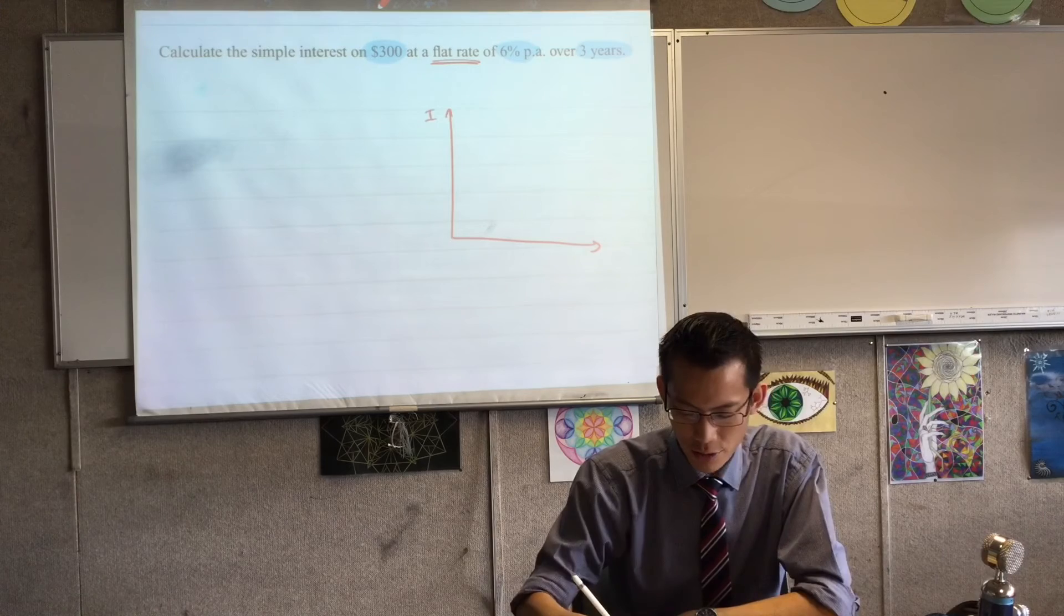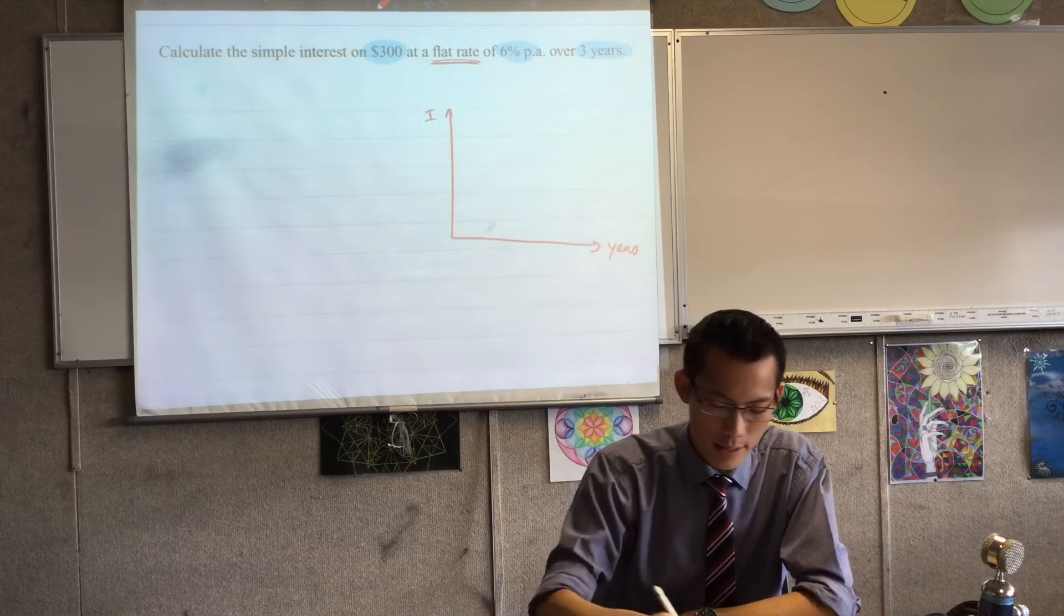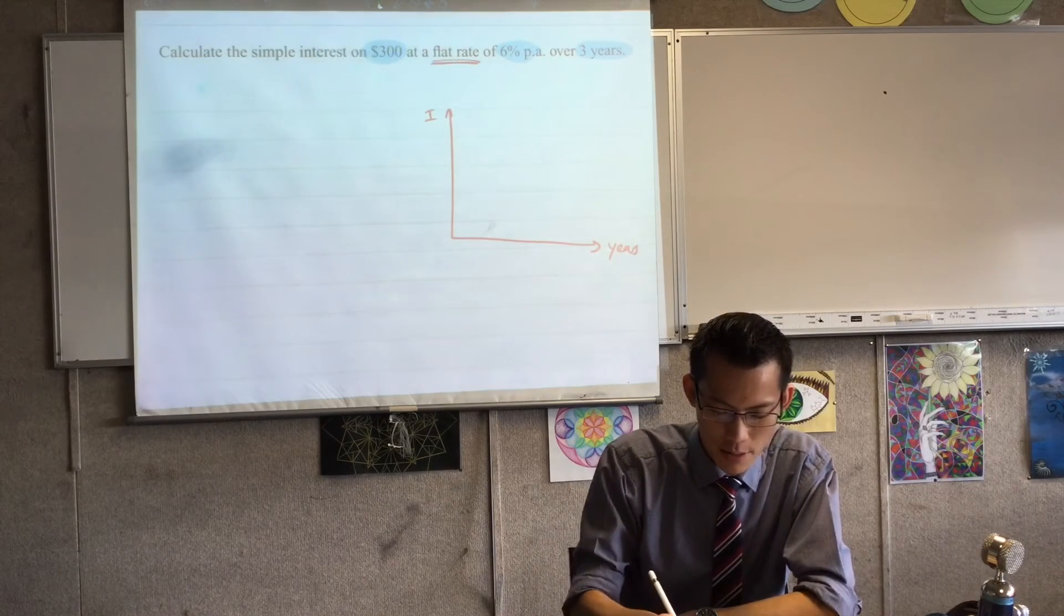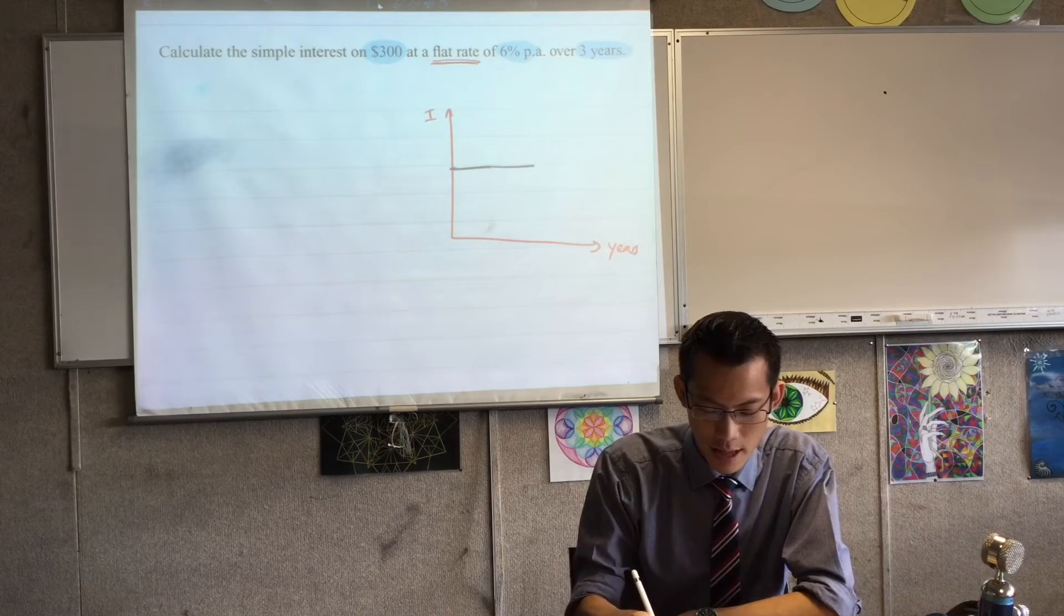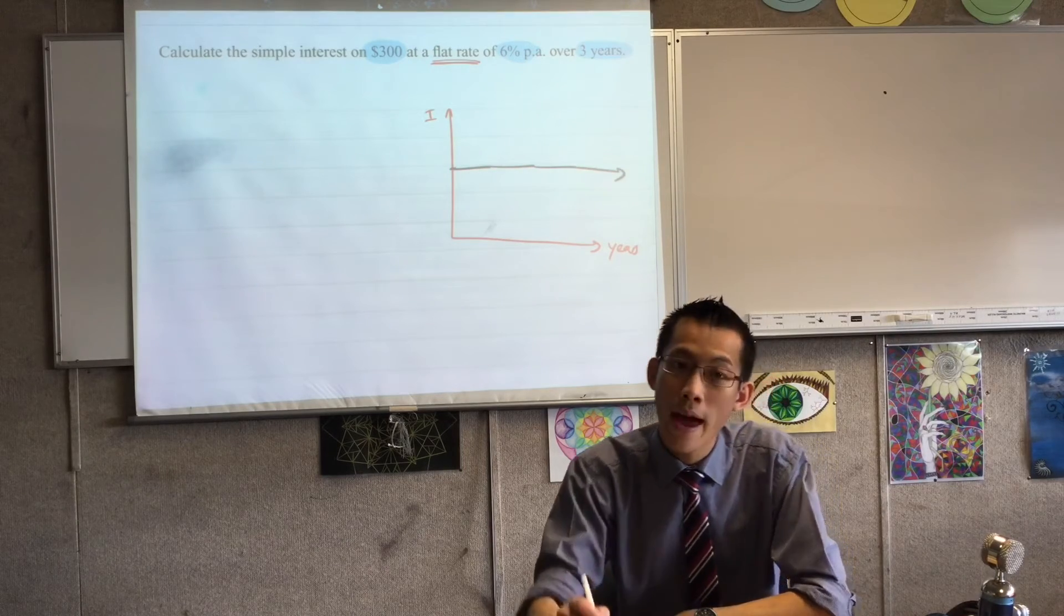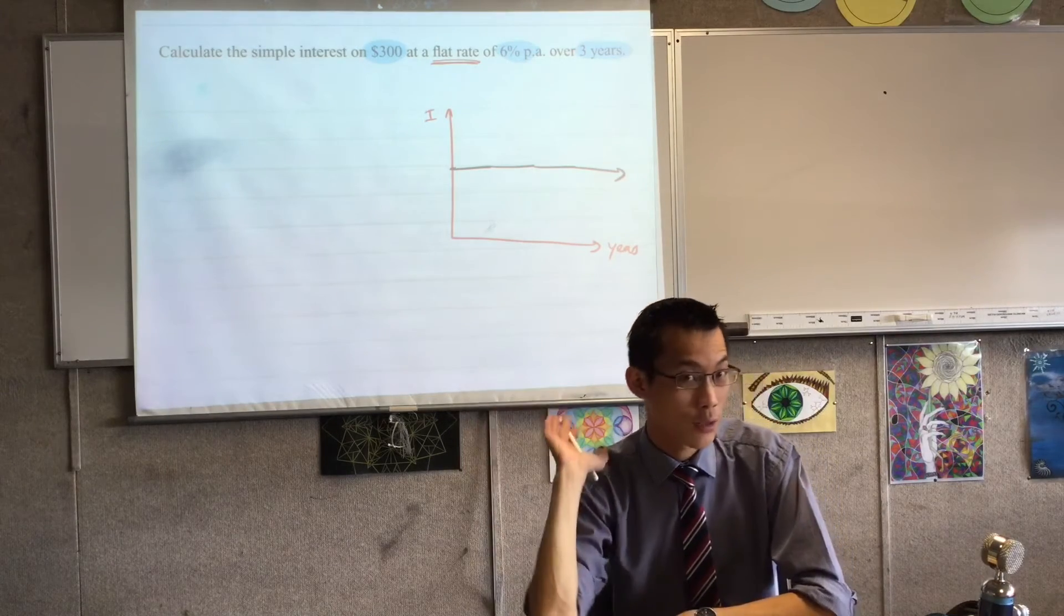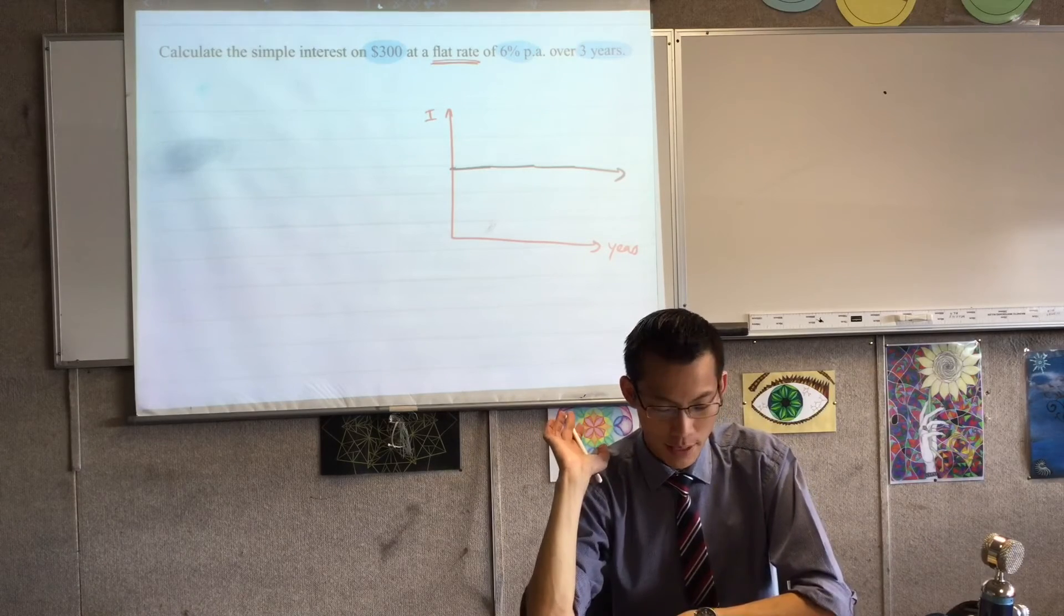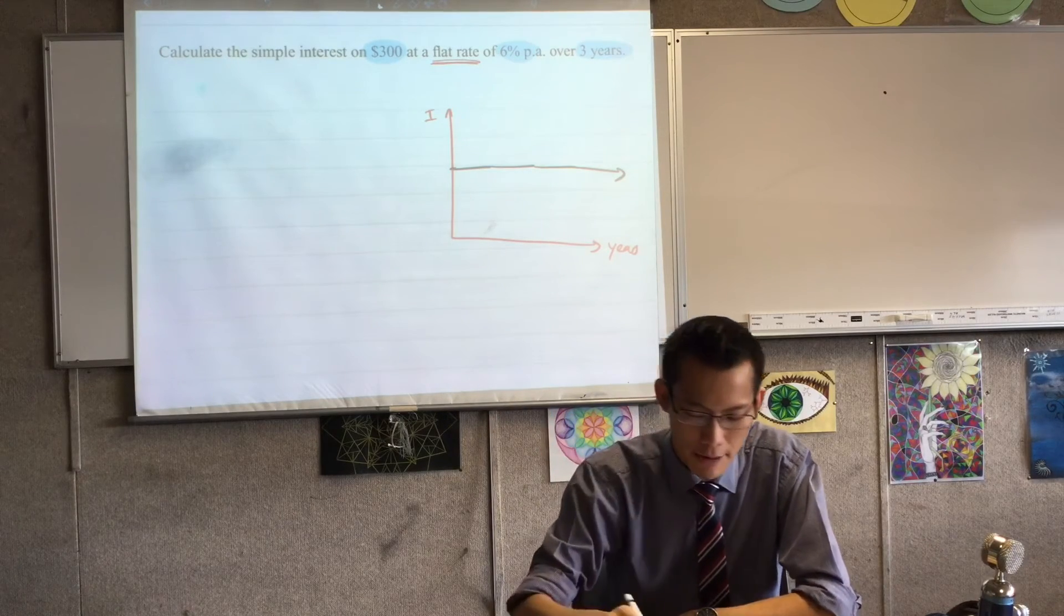So you can literally see this graph, which is the kind of thing we were looking at last topic. It's a flat graph, so that's why it's called a flat rate. Okay, so now that we've got that out of the way, let's just finish off our analysis of the question by looking at these three numbers and working out what each one is.